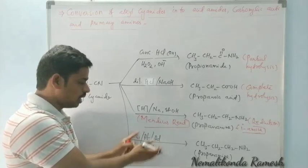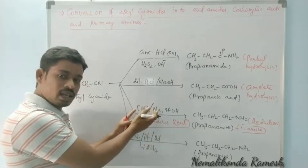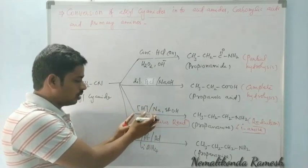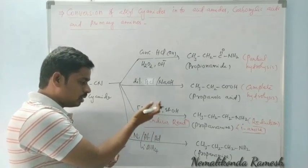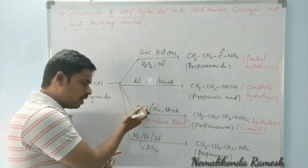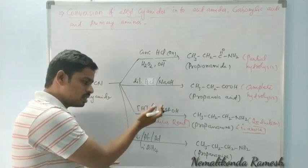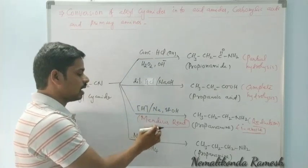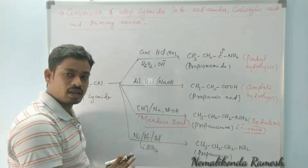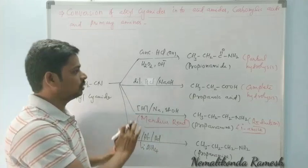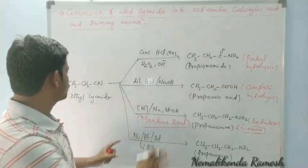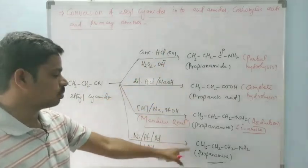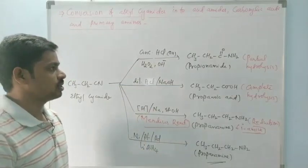This is also reduction, but when addition of hydrogen takes place in the presence of sodium and alcohol, it is specifically called Mendius reaction. So this is the conversion of alkyl cyanides into acid amides, carboxylic acids, and primary amines.